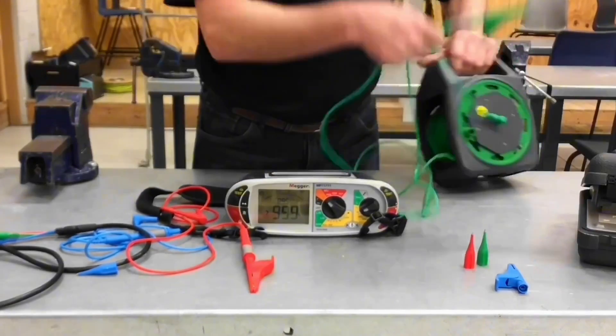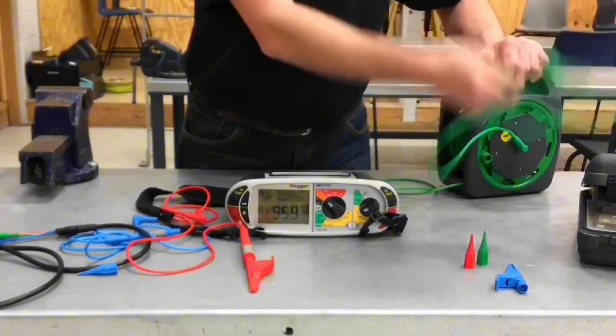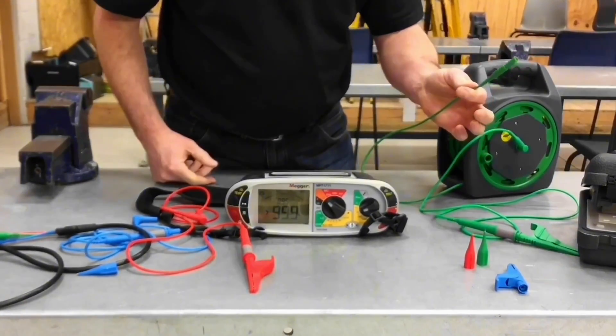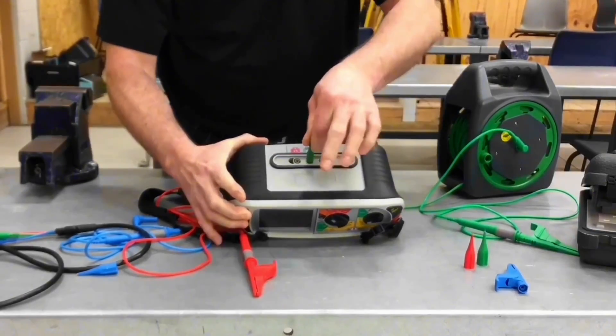I've put my probe into the side here, so I'm using my green lead. So it's into the side of the wandering lead, and we've got the probe connection that comes with the actual wandering lead itself, which will go, in this case, into the green section of the top of the Mega MFT.